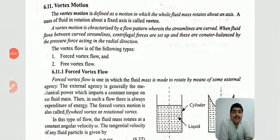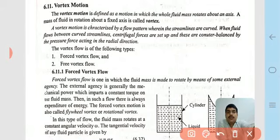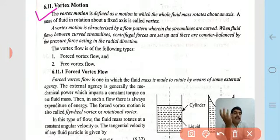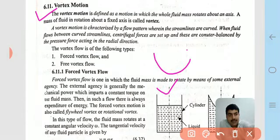Today, in this lecture, we will cover vortex motion. Vortex motion is defined as a motion in which the whole fluid mass rotates about an axis. A mass of fluid rotating about a fixed axis is called a vortex. This axis is called the vortex axis and rotation about this axis is called vortex motion.